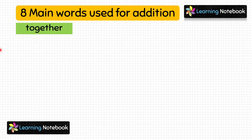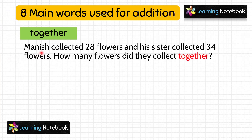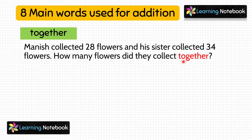The next word is 'together.' For example, the word problem: Manish collected 28 flowers and his sister collected 34 flowers. How many flowers did they collect together? So when you see the word 'together' in a word problem, it should hint you that it is a word problem of addition.